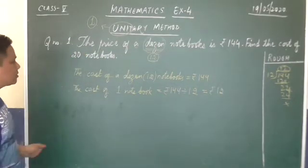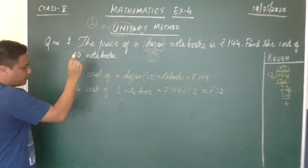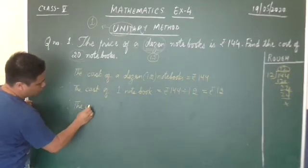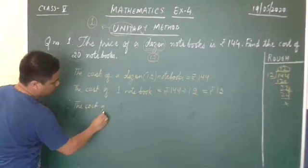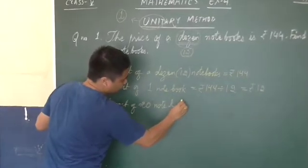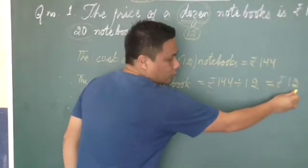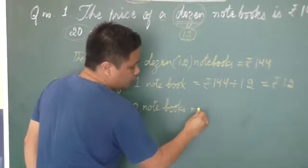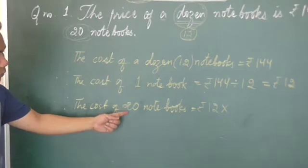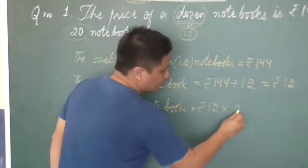The last step, and the most important step is, you have to get the cost of 20 notebooks. So for that, we need to write, therefore, the cost of 20 notebooks is equal to, the cost of one notebook was 12, rupees 12. So that is multiplied by 20.